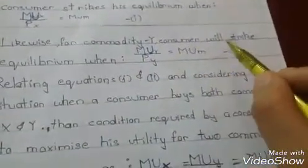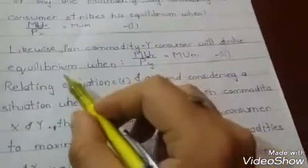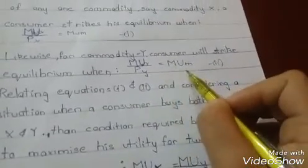Likewise, for commodity Y, consumer will strike his equilibrium when MU Y upon price PY is equal to MU M.